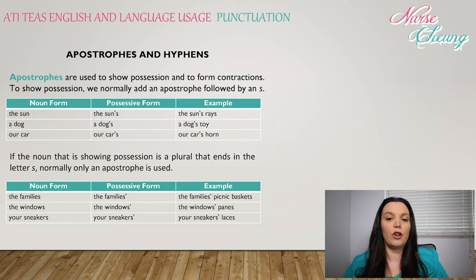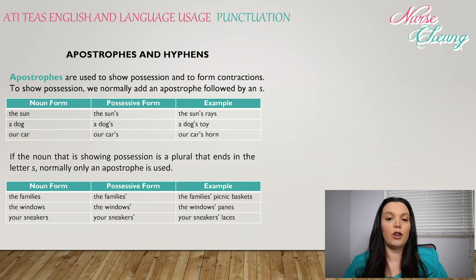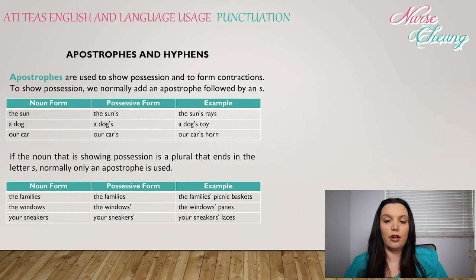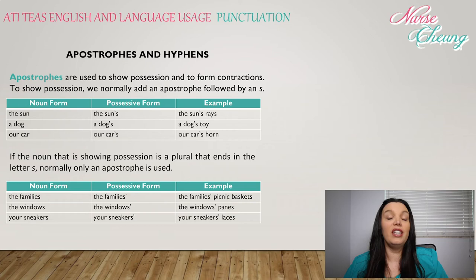Apostrophes are used to show possession and to form contractions. To show possession, we normally add an apostrophe followed by an s. For example: 'the sun' becomes 'the sun's rays'; 'a dog' becomes 'a dog's toy'; 'our car' becomes 'our car's horn.' If a noun showing possession is a plural that ends with the letter s, normally only an apostrophe is used. For example: 'the families'' for 'the families' picnic baskets'; 'the windows'' for 'the windows' panes'; and 'your sneakers'' for 'your sneakers' laces.'